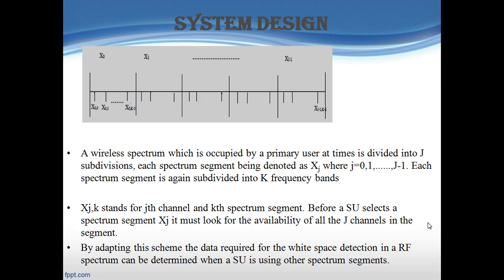In designing the system for the frequency hopping spread spectrum, the wireless spectrum occupied by a primary user has been divided into J subdivisions, where each spectrum segment is denoted by X_j, with j varying from 0 to J-1. Each spectrum segment is again subdivided into K frequency bands, so at any point X_{j,k} stands for the j-th channel in the k-th spectrum segment.